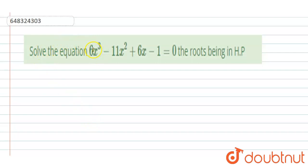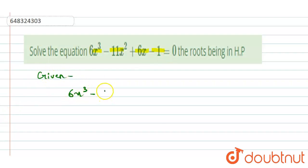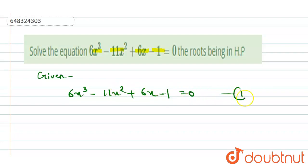Hello everyone. Our question is: solve the equation 6x³ - 11x² + 6x - 1 = 0, the roots being in HP. It is given that the roots are in HP. So firstly, the given equation is 6x³ - 11x² + 6x - 1 = 0. This is equation one.